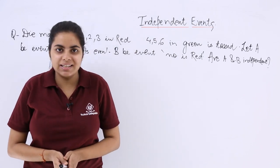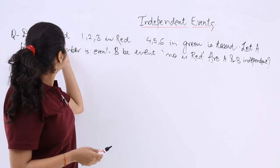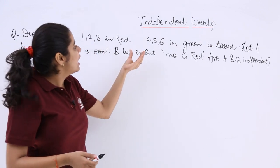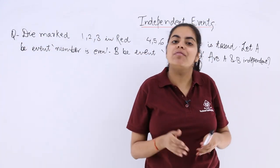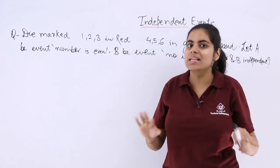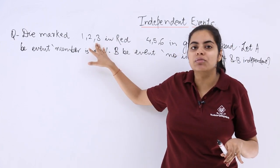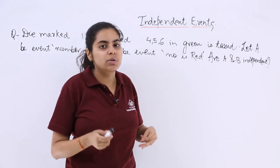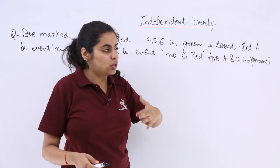This is an NCERT book question — a basic one. A die marked 1, 2, 3 in red and 4, 5, 6 in green is tossed. So you have 6 numbers on one die, with 3 numbers in red and the other 3 numbers — 4, 5, 6 — in green.